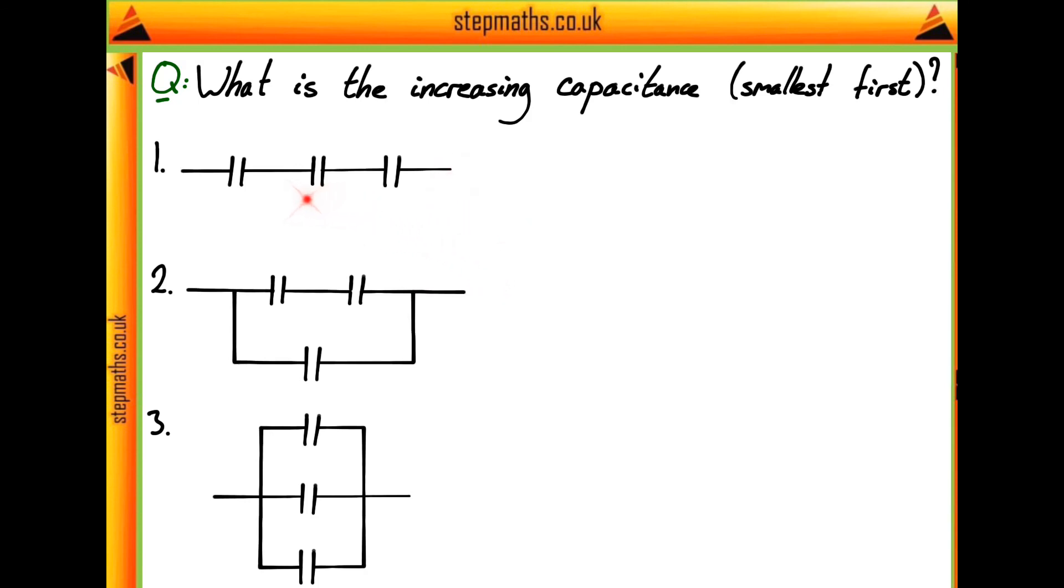So with capacitors like this in configuration one, the three capacitors are just in series to one another. So we do the opposite of what we do with resistors in series.